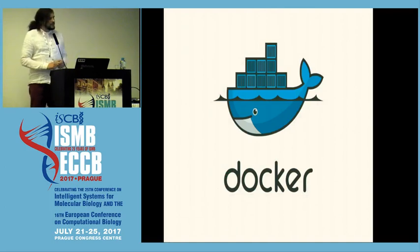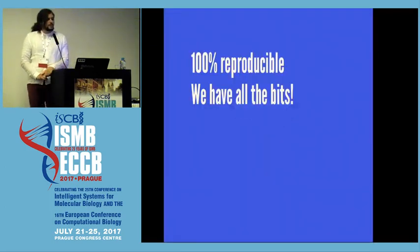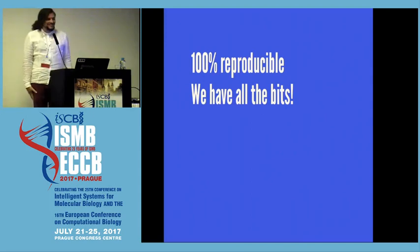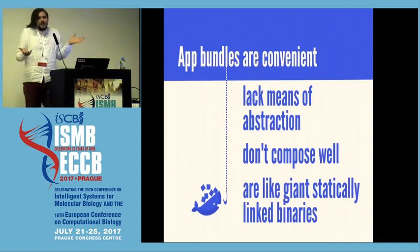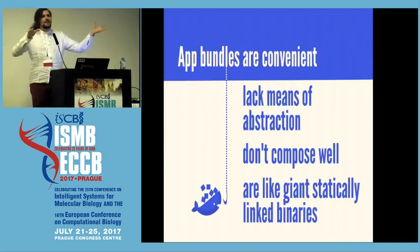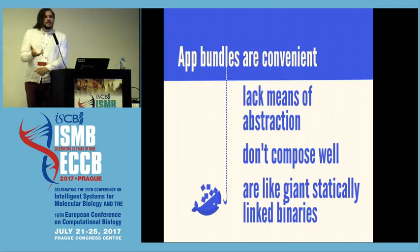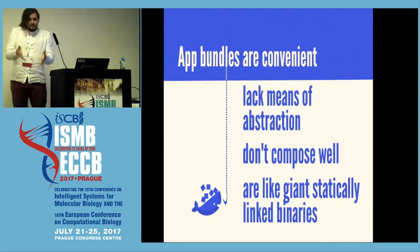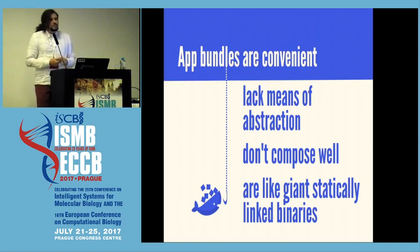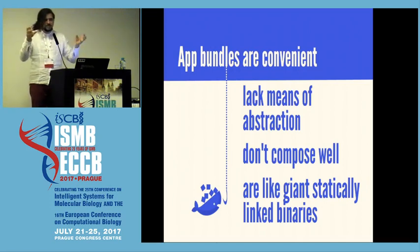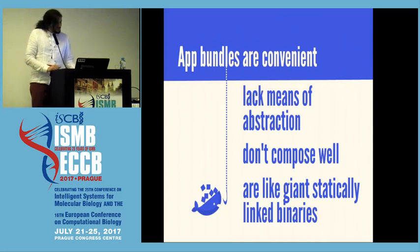What about Docker? This solves everything, right? It's 100% reproducible — you've got all the bits, and you have the same bits as I have. Problem solved. But it's also 100% stateful and we only have the bits. App bundles are really convenient — you can install the same exact bits on a different machine and it runs — but it lacks a principled means of abstraction. You no longer see the forest for the trees; you look at bits, no longer at packages. Docker is also famous for not composing well with other containers. We've got essentially giant statically linked binaries that are bigger than statically linked binaries.